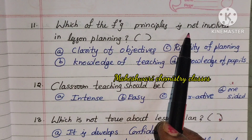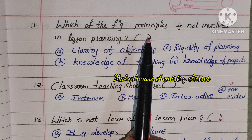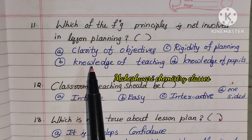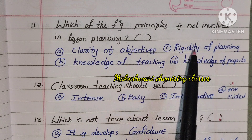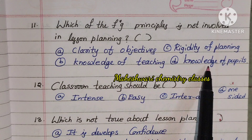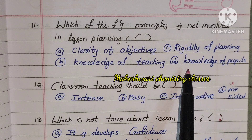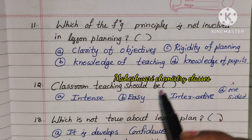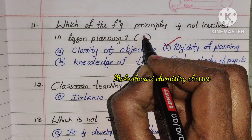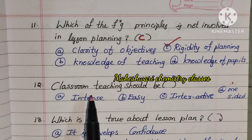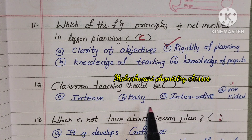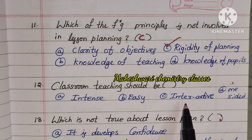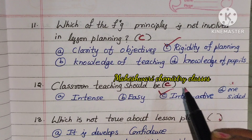Eleventh question: Which of the following principles is not involved in lesson plan? Options: Clarity of objectives, Rigidity of planning, Knowledge of teaching, Knowledge of pupils. Rigidity of planning is not a principle of lesson planning. So 11th one is C. Next, classroom teaching should be Interactive — option C is correct.